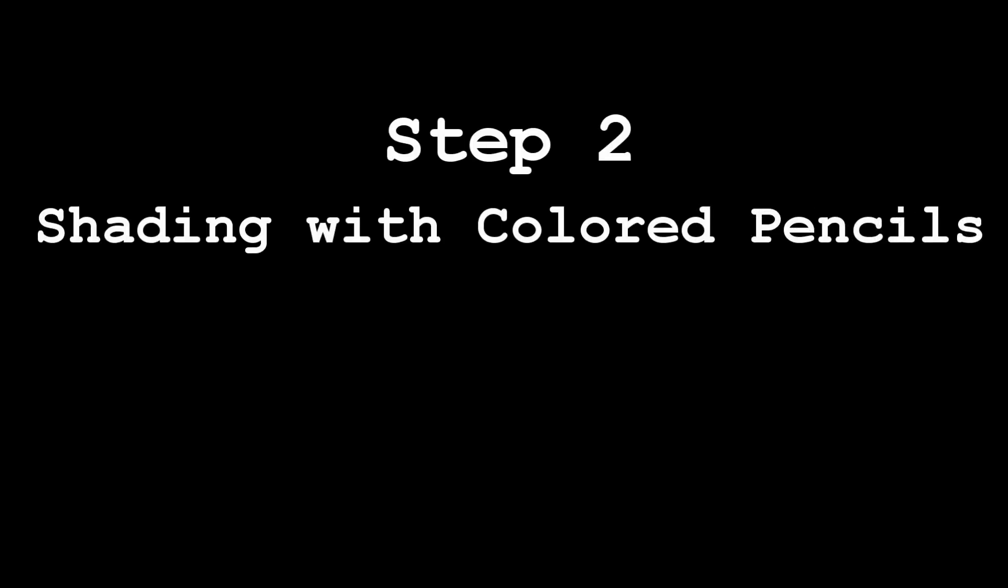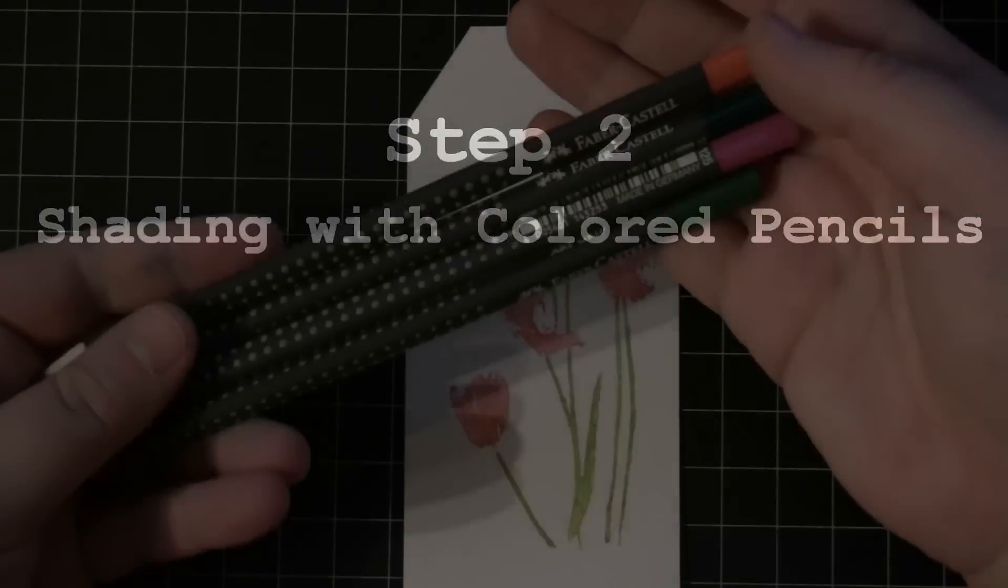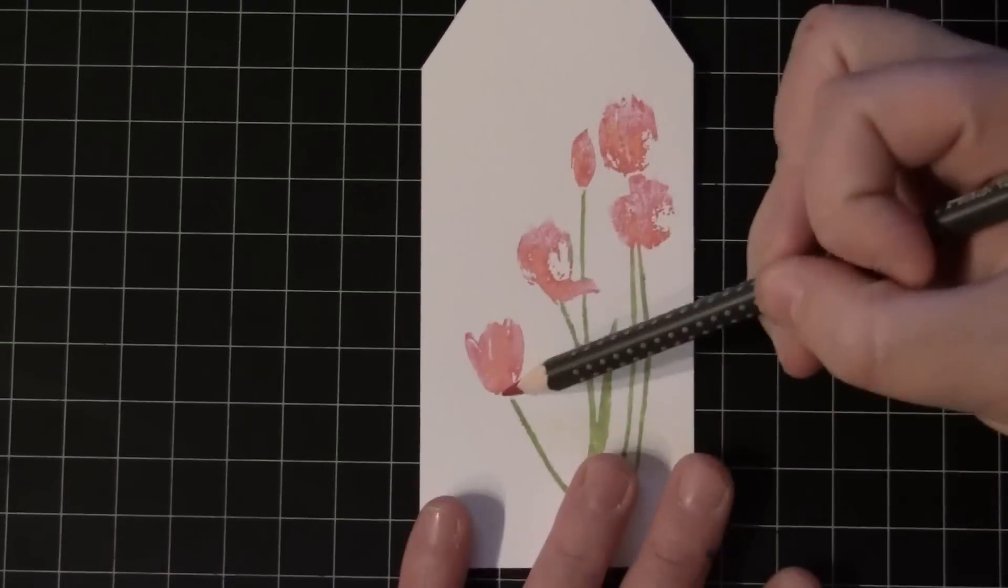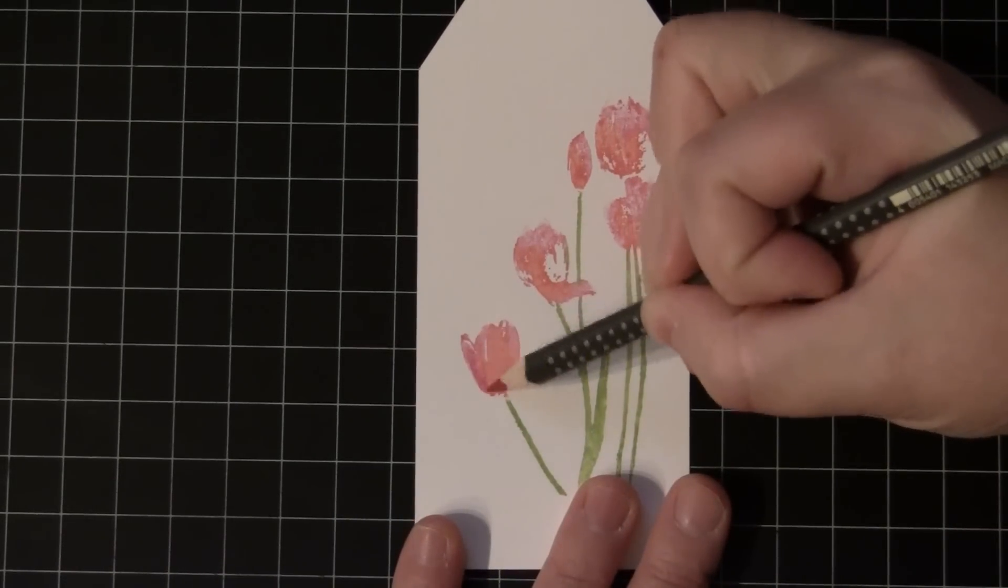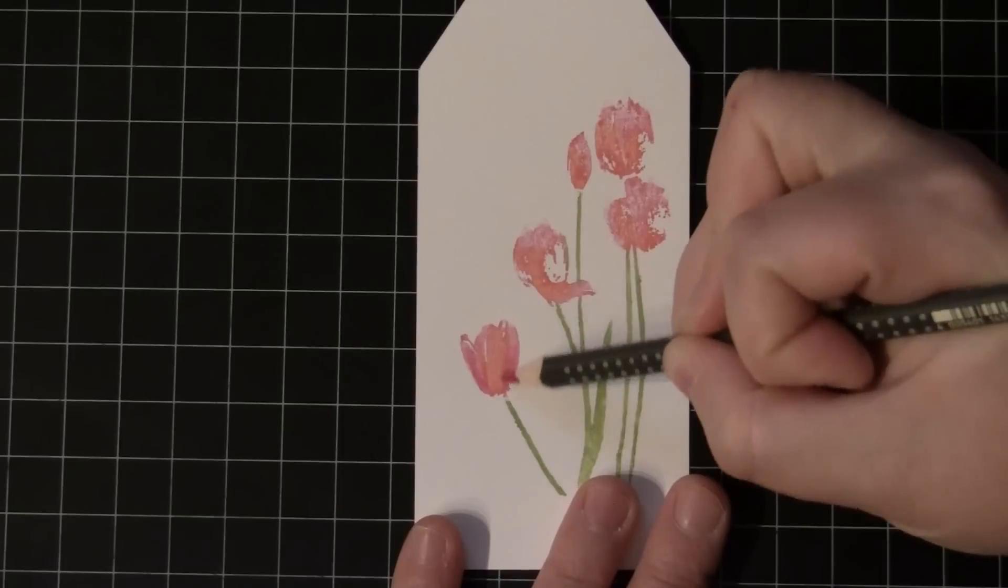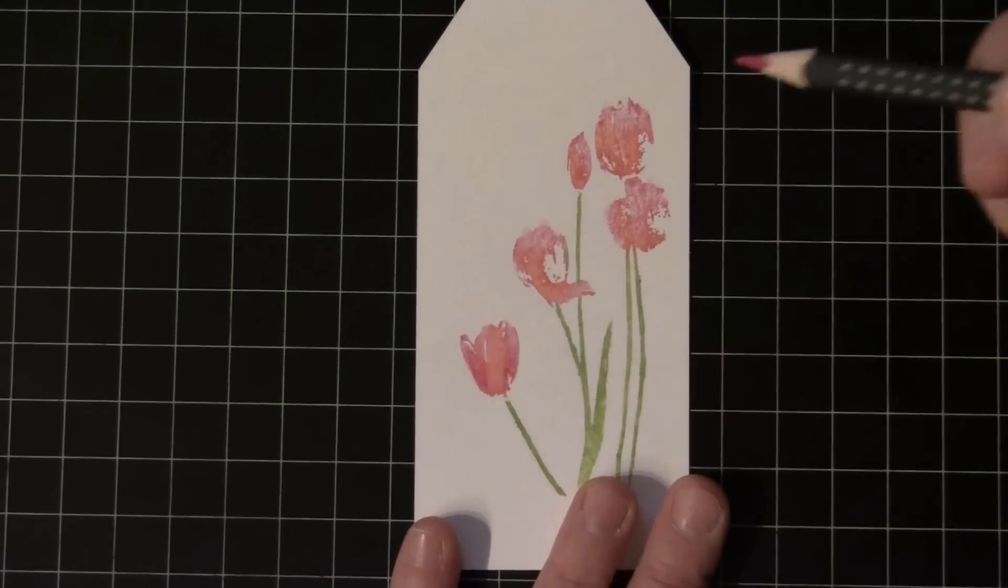The next step would be to add some shading with colored pencils. So once that has dried, I'm going to go in with the Faber-Castell Art Grip colored pencils and I'm just going to add some shading right on top of the marker. And these products are designed to mix and match together so your colors will match.